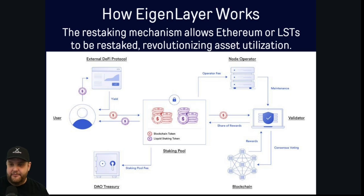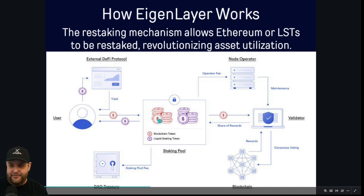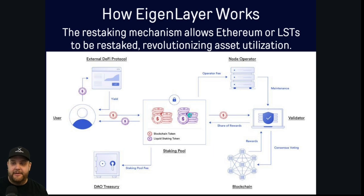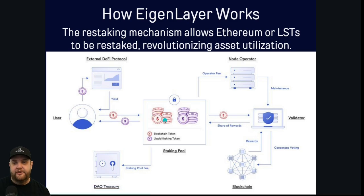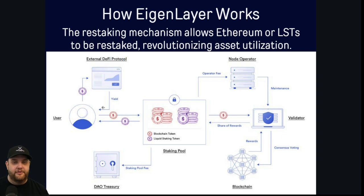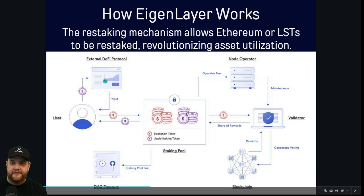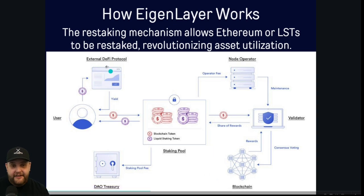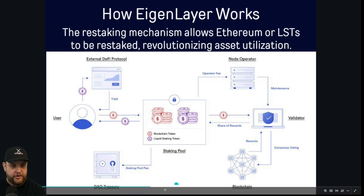Looking at this chart: the blockchain token is the red token, and the liquid staking token is the token you get back. The box in the center is the staking pool. As a user, you put in your blockchain token — your Ethereum or your X1 — and in return you get this liquid staking token (purple). Once you have this liquid staking token, you can use it to participate in external DeFi protocols and earn yield, while your blockchain token is still being staked in the native staking pool. This creates a flywheel effect where the user, external DeFi protocols, node operators, validators, and DAO treasuries all receive fees and rewards.